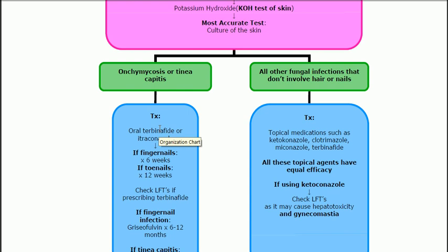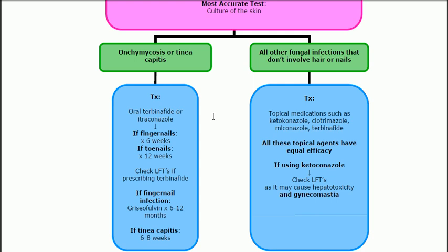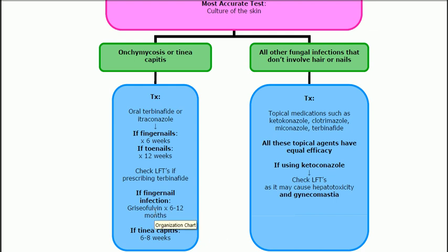What do we have to worry about when giving terbinafine? Elevation of liver enzymes. So we've got to check our LFTs if prescribing terbinafine. If a patient has liver cirrhosis or some kind of liver toxicity, you can't give terbinafine — this is when you go to griseofulvin. Griseofulvin can be used for fingernail infections but not toenail infections, and you have to give it for six to 12 months. If it's tinea capitis, give it for six to eight weeks.